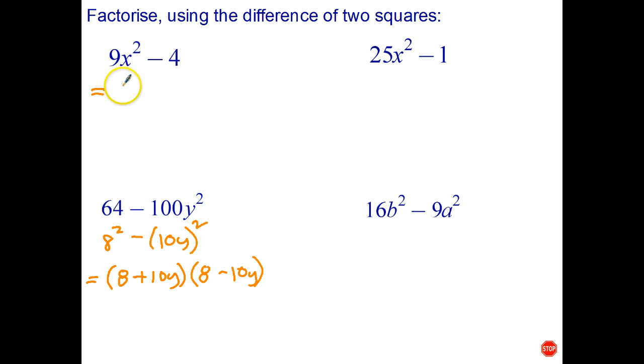So 9x² I could think is (3x)² and 4 is 2². So it fits the pattern of a² - b². And that can be factorized as (a + b)(a - b), which is (3x + 2)(3x - 2).